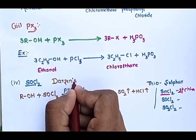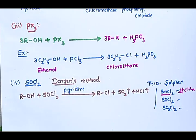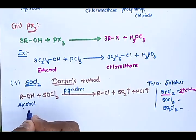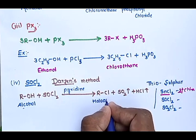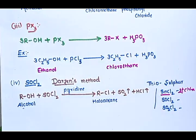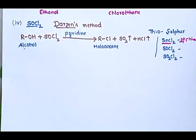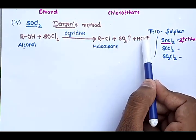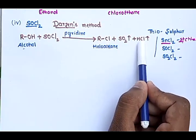Darzen's method is the best method for the preparation of haloalkanes. Why is it the best method? Because in this reaction the by-products are sulfur dioxide (SO₂) and HCl, which are both gases and escape from the reaction mixture.